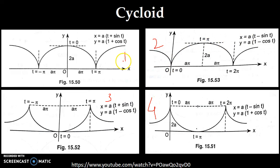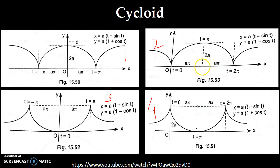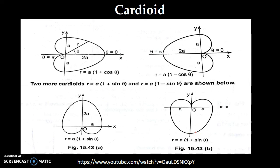If you remember the first set — x equal to a times (t plus sine t), y equal to a times (1 plus cos t) — you can recall the second, third, and fourth types by just changing the signs. The first two cycloids face downwards with the center at the origin and at five respectively. The last two cycloids face upwards.